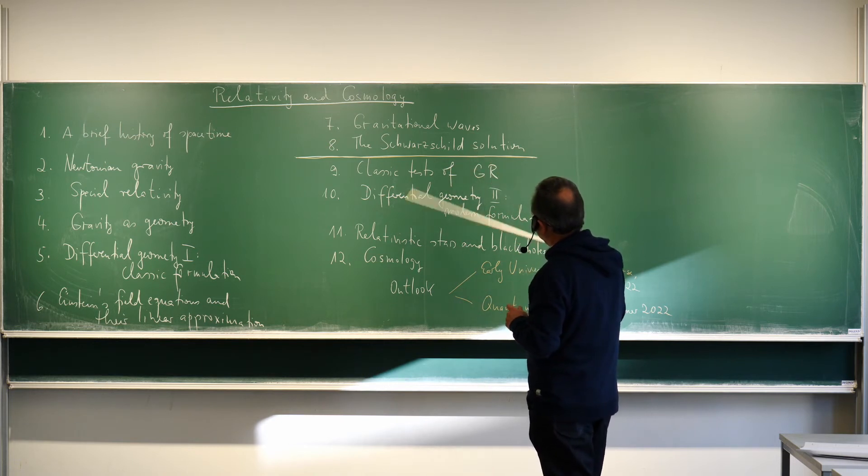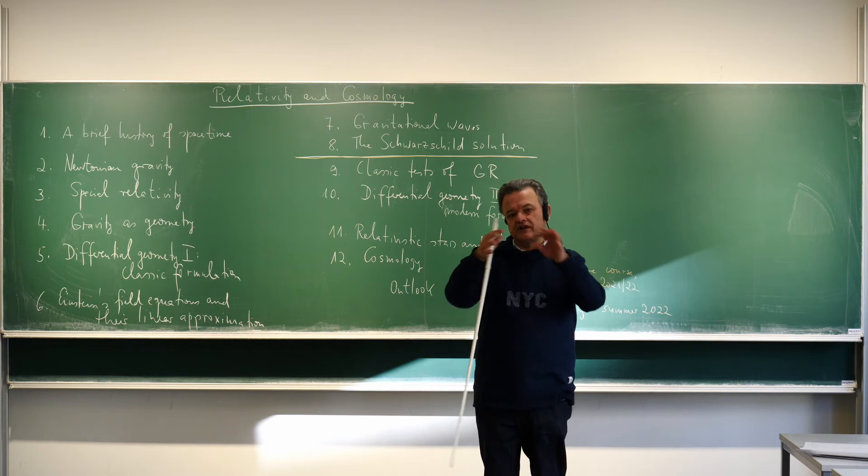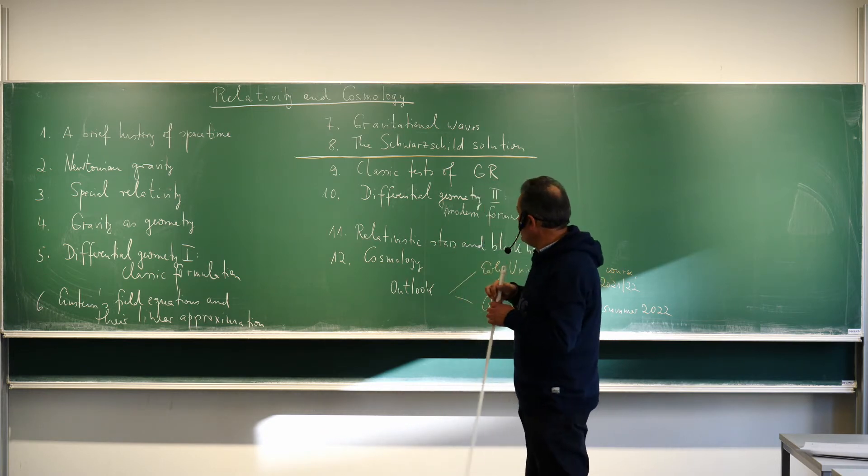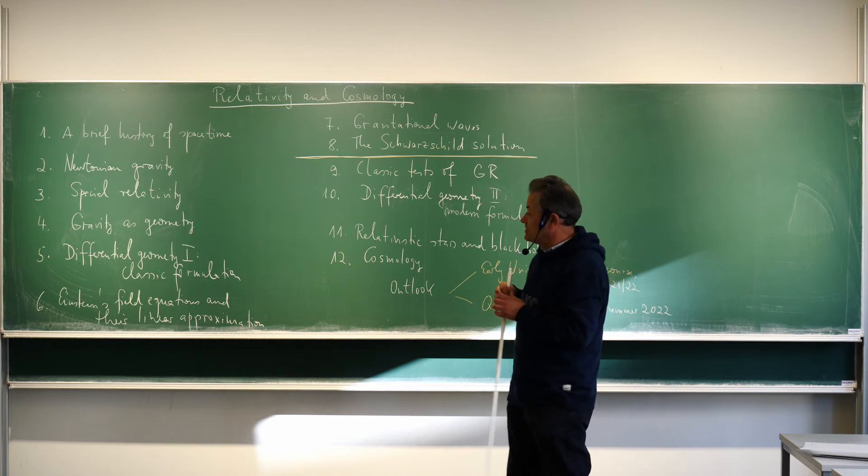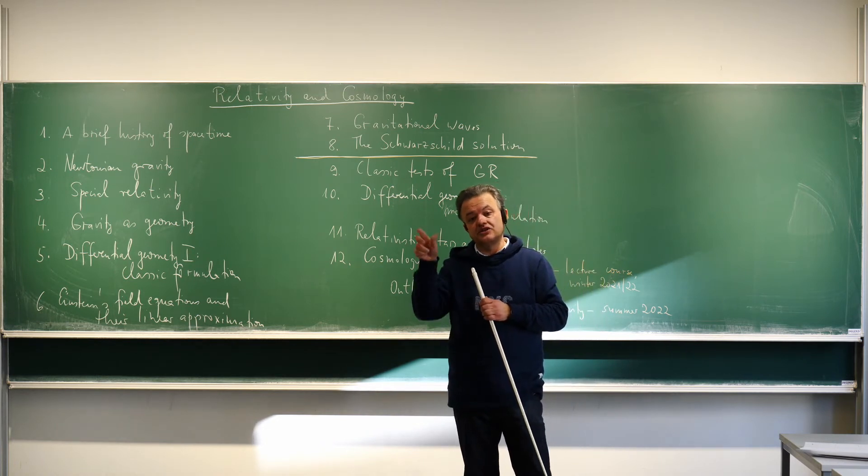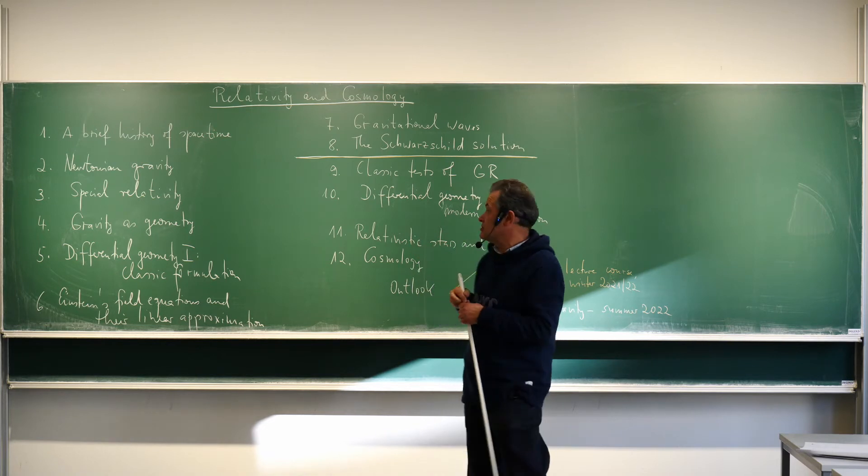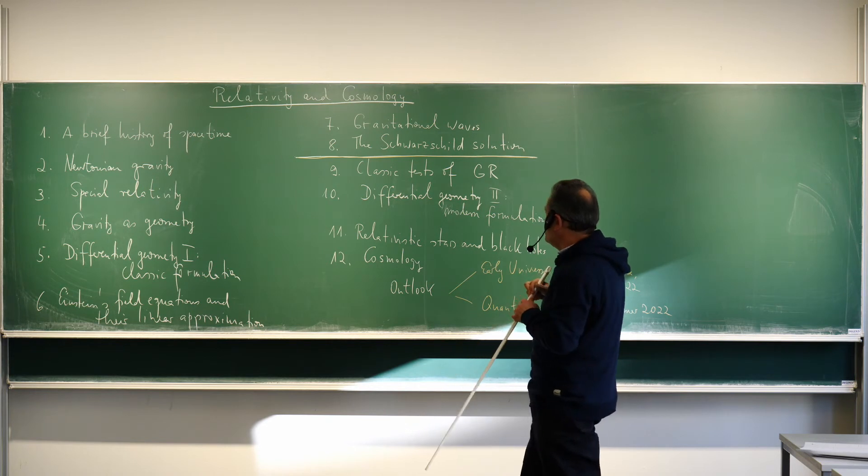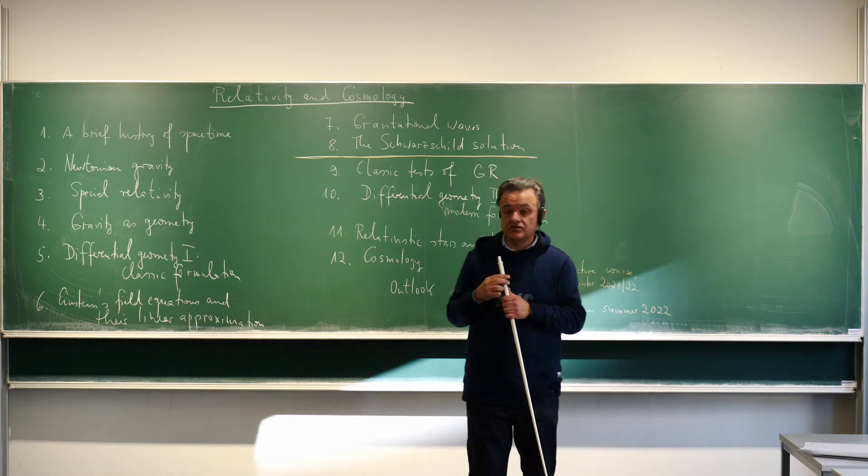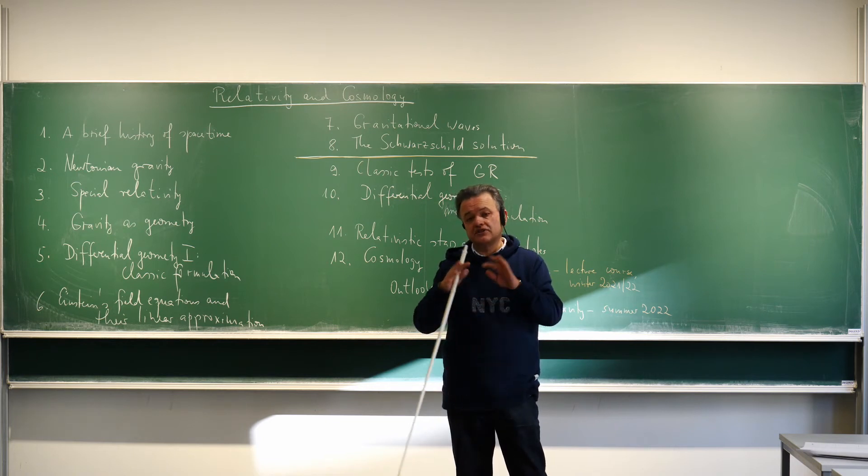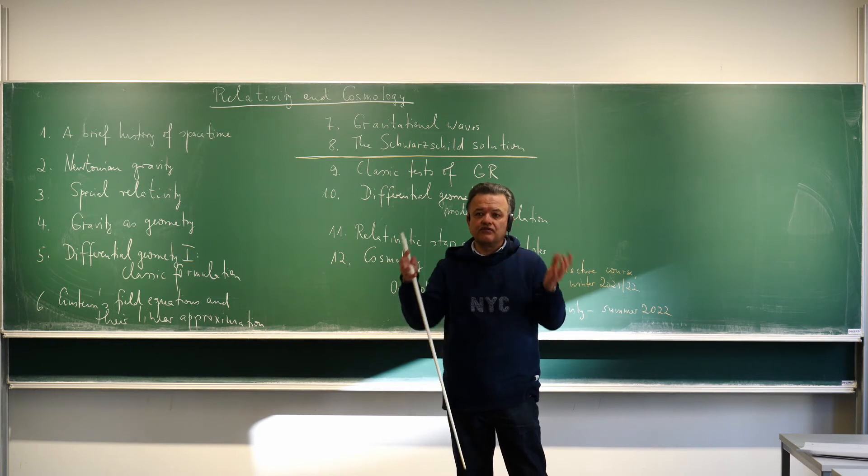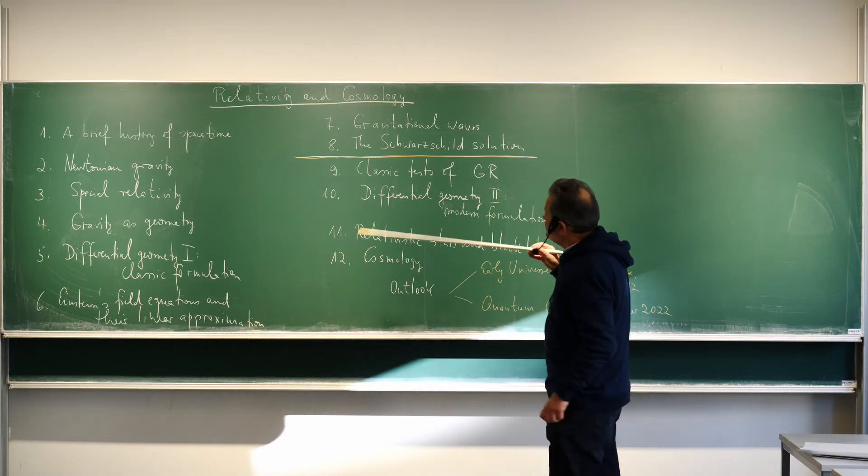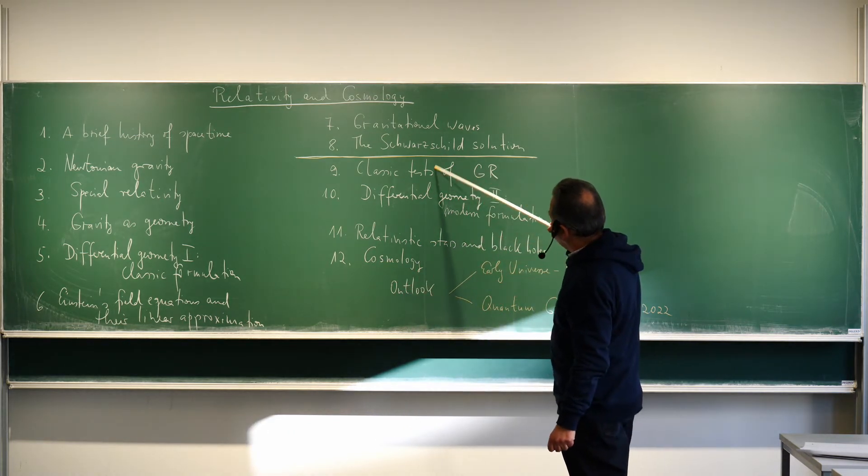The Schwarzschild solution is a solution that holds outside a spherically symmetric body and generalizes the Newtonian potential minus gm over r, the 1 over r potential. And the Schwarzschild solution is one, if not the most important, exact solution in relativity because many objects are approximately spherically symmetric. And so you can use the solution at least to high accuracy outside those bodies, especially in the solar system.